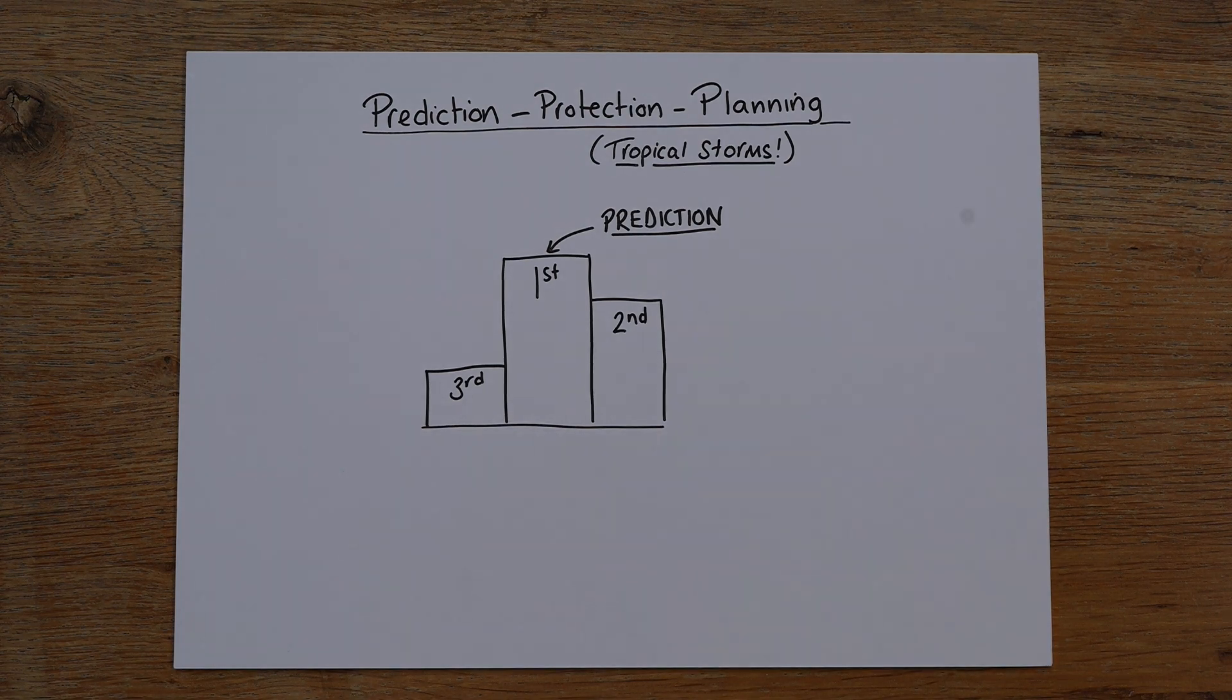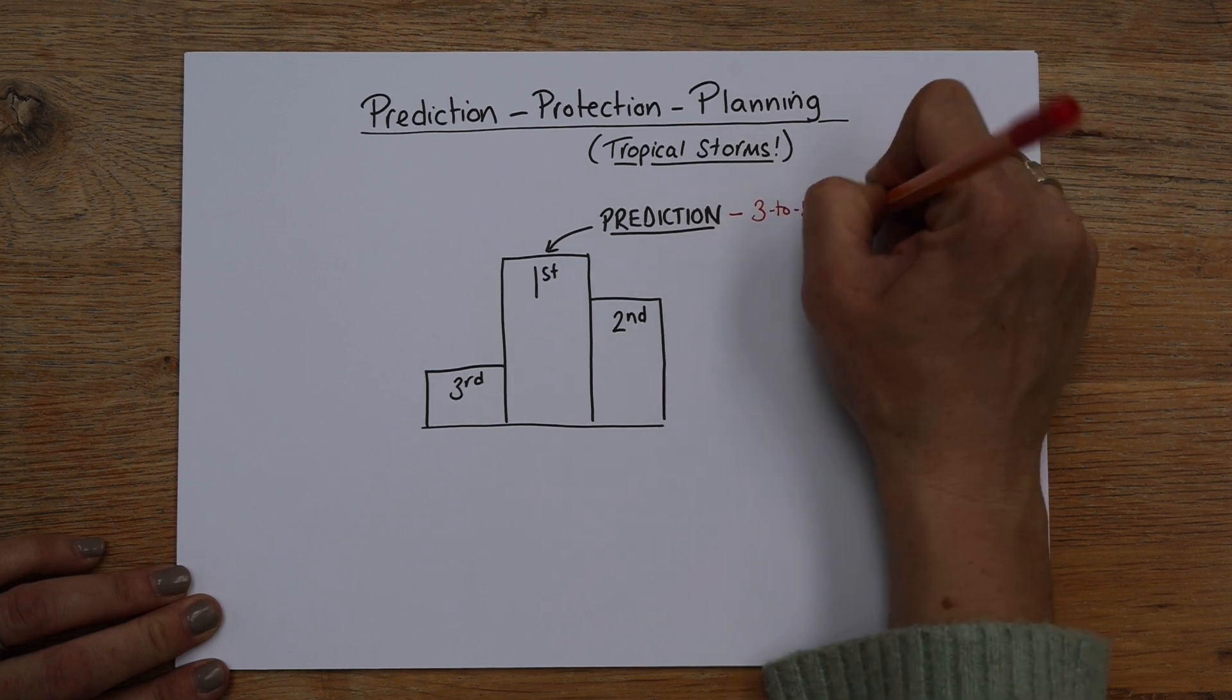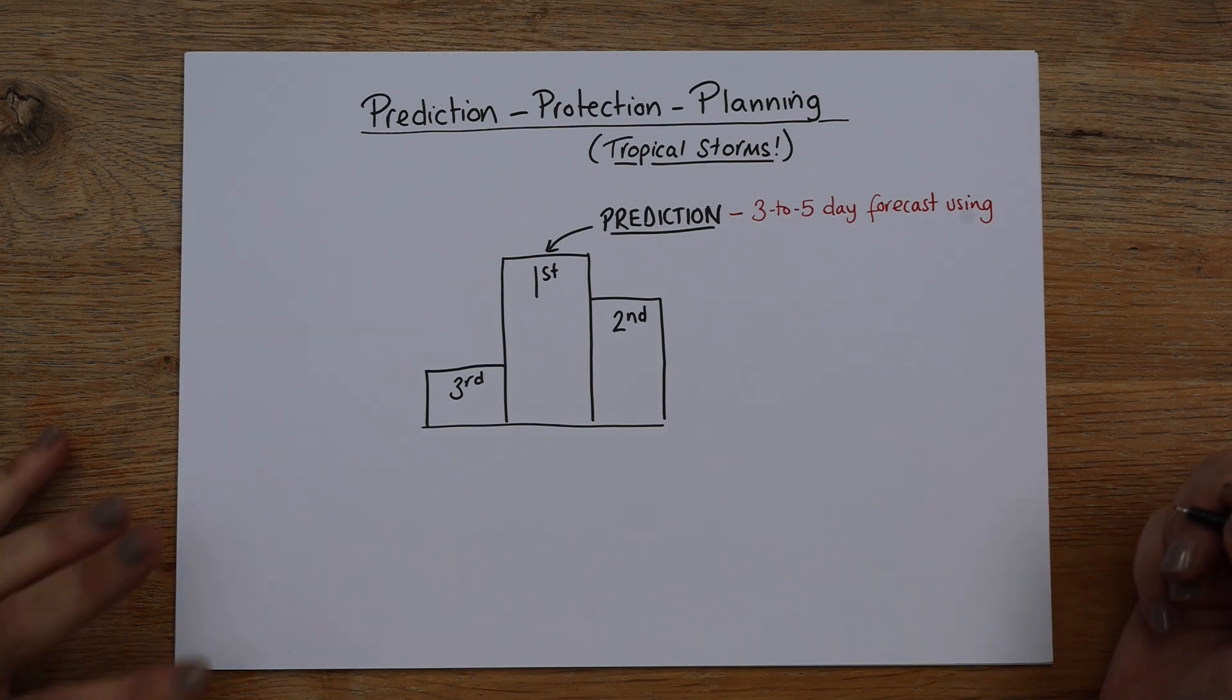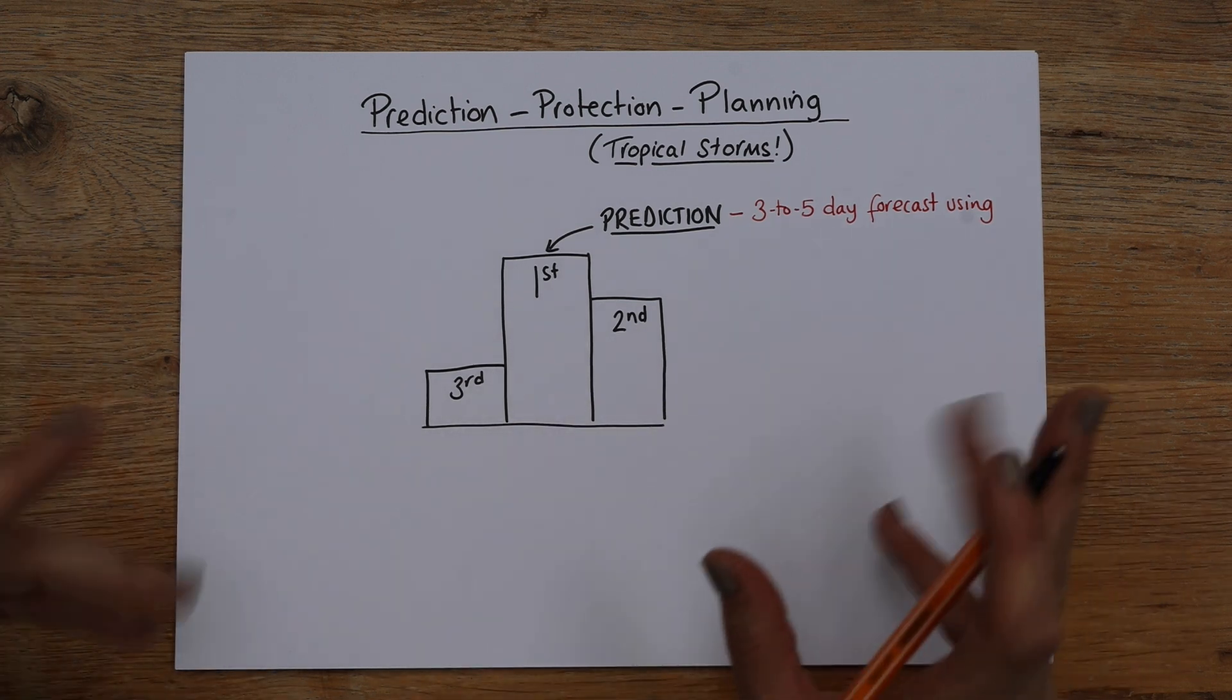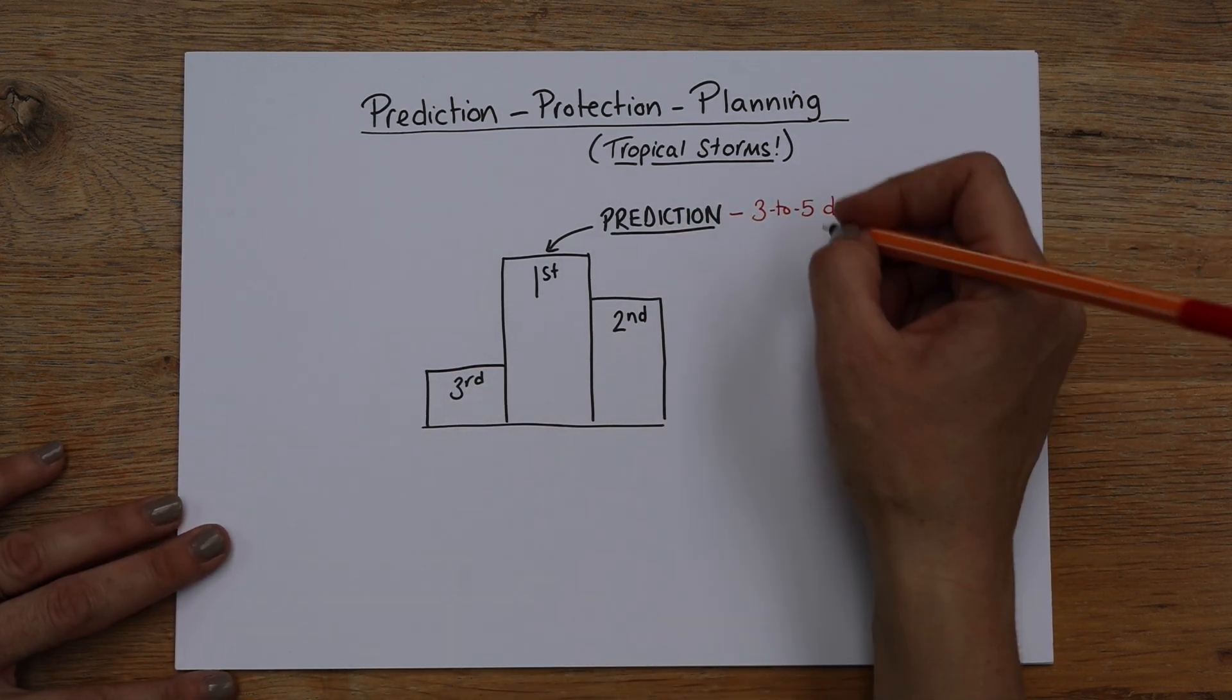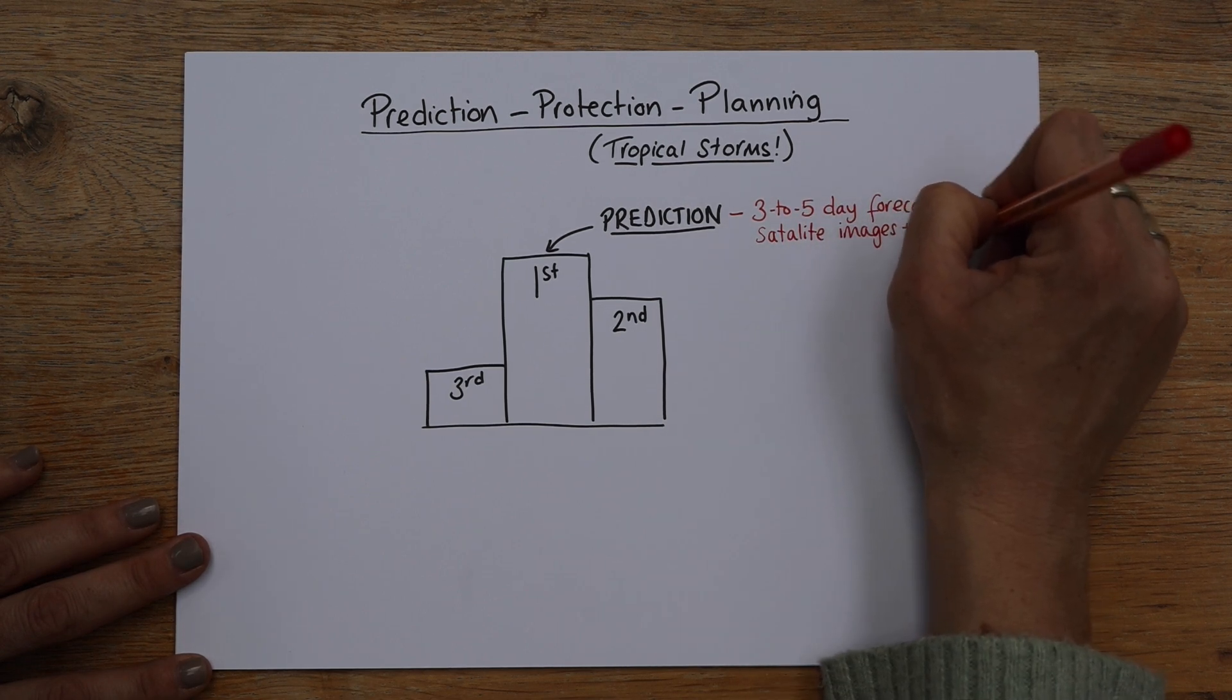The reason being that they can do a three to five day forecast. That's quite a lot of time. So if we write three to five day forecast. Now, this basically uses satellite imagery of the storm and tracking it and computer models. So it's pretty accurate. They can be volatile, they can shift position unexpectedly, but it does give people time to evacuate.